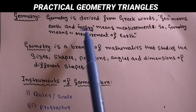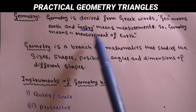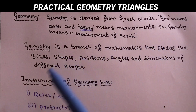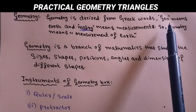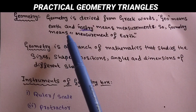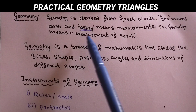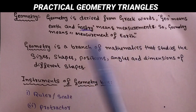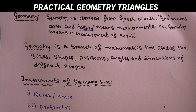Geometry is derived from Greek words. Geo means earth and meitri means measurement. So geometry comes from two Greek words joined together. Geo means earth, and meitri comes from 'meitra' which means measurement. So geometry means measurement of earth - that is, it is about the measurement of the earth or land.